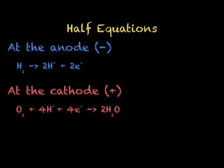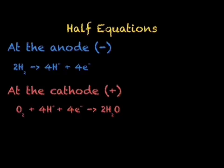In order to write our final balanced equation, we need to balance our two half equations. As we require four electrons to create our water, we must release four electrons at the anode. To do so, we multiply the entirety of this half equation by two, giving us 2H₂ forming 4H⁺ plus 4e⁻. We can then write our full balanced equation: 2H₂ plus O₂ produces 2H₂O.